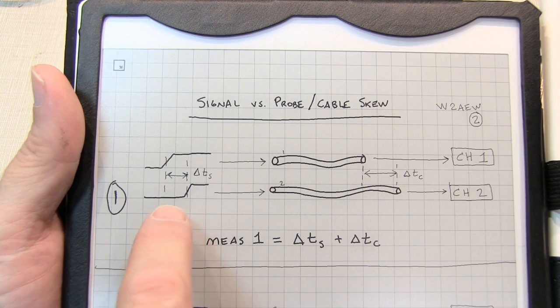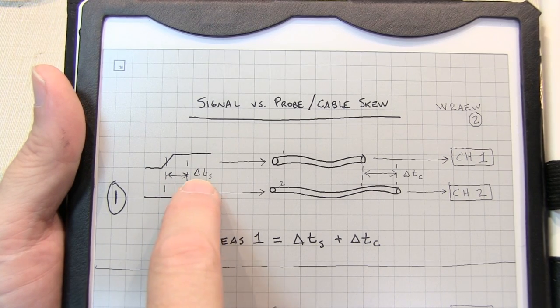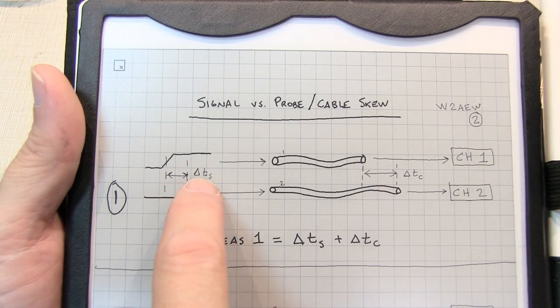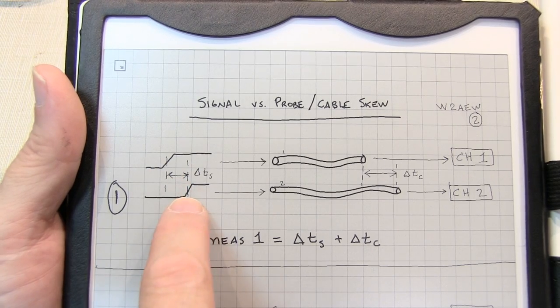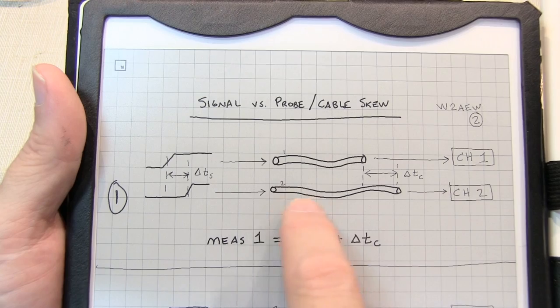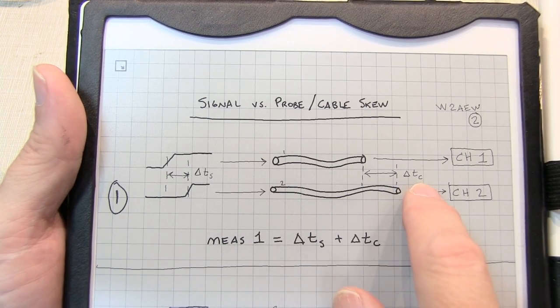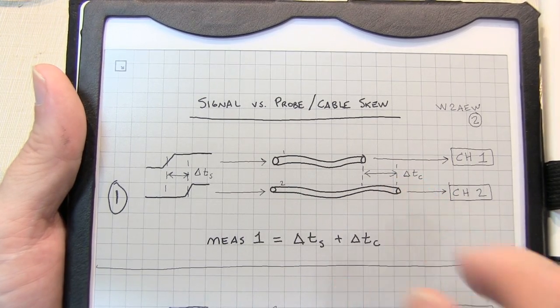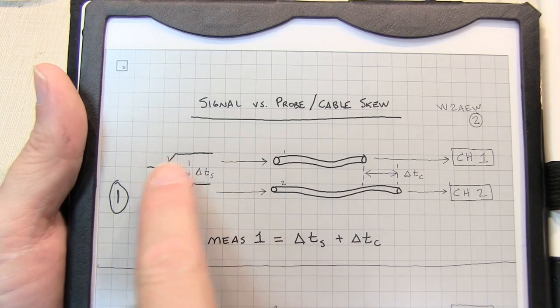So, let's take a look at this situation. I've got a delta Ts, we'll call that the delta T between the signals that exist between those signals. And if we've got different lengths or different delays in the cables, we'll also have a delta Tc, a delta T due to the cables.